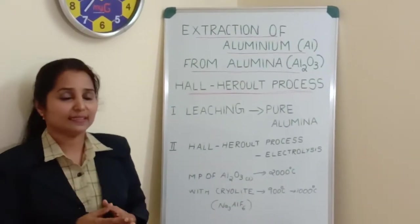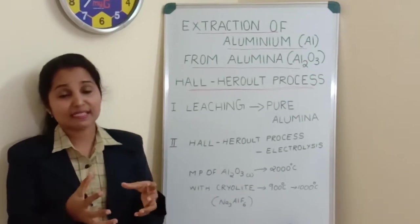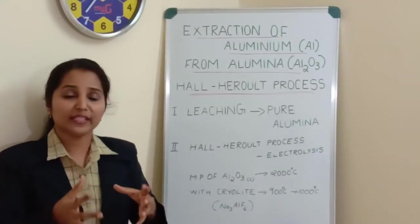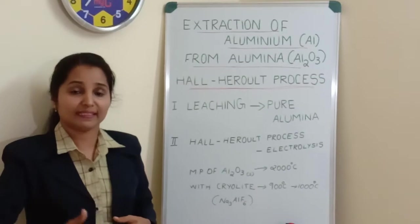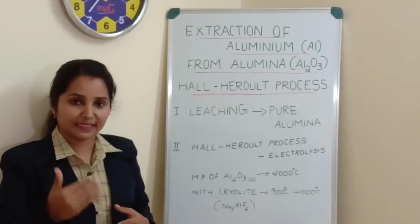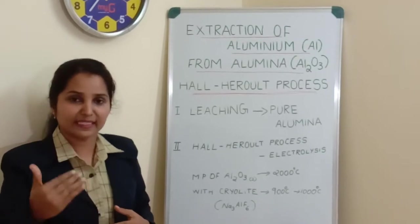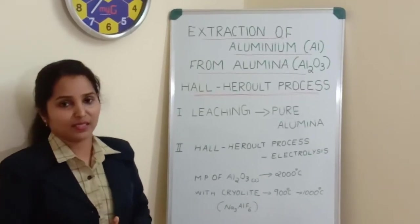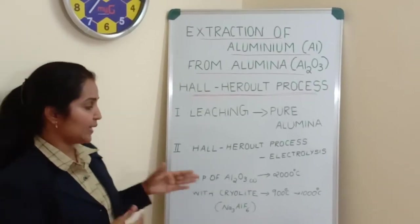Since we know that when a solid is in its molten state or in its liquid state, it can conduct electricity more or its conducting ability increases. So in that case, what we can do is we can melt this solid alumina into its molten state or into its liquid state.